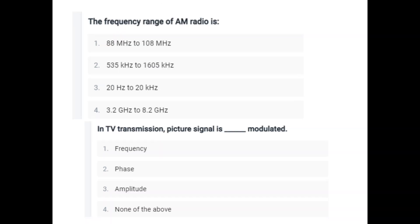Question eight: The frequency range of AM radio is 535 kHz to 1605 kHz. Okay?